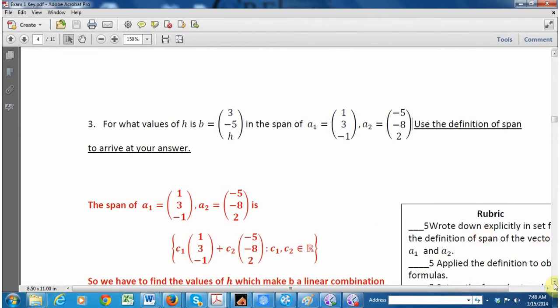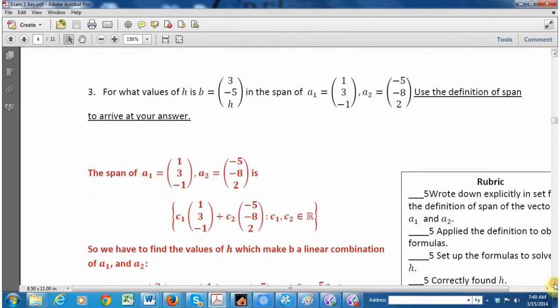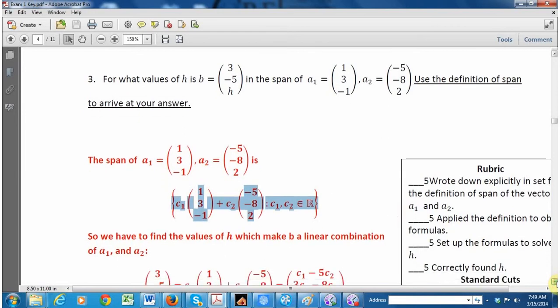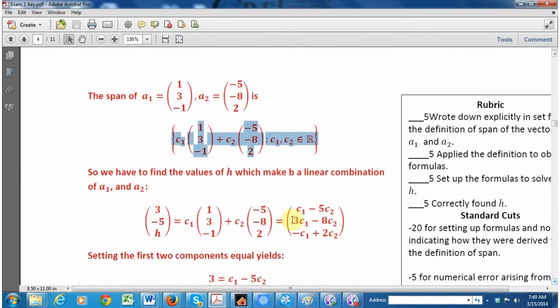And then I restate the problem in terms of the definition. What I want to know is whether this vector b up here belongs to the span of this, it belongs in this set right here below. So if it belongs, if it's a member of the set, then it can be expressed as a linear combination of those two vectors. That's what it means to belong to that set.